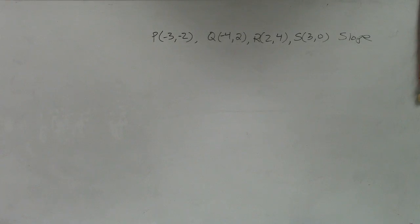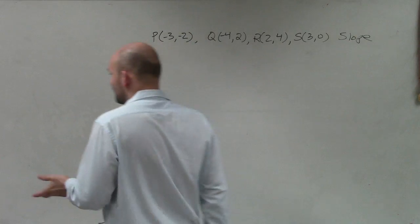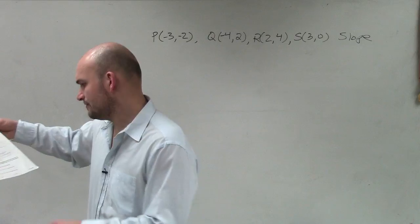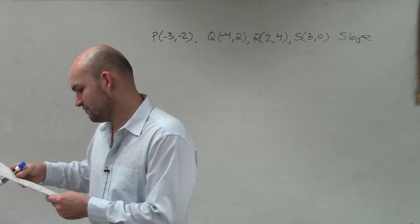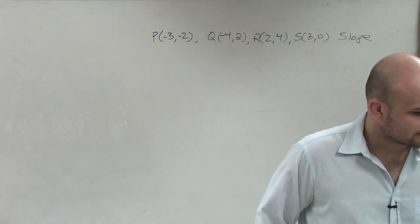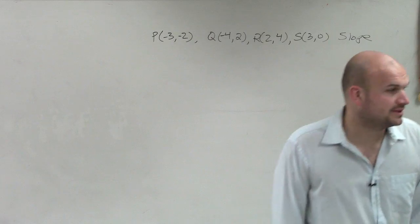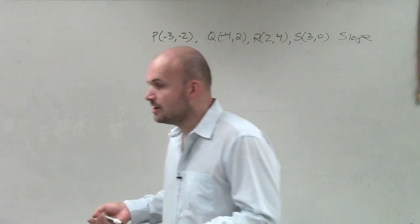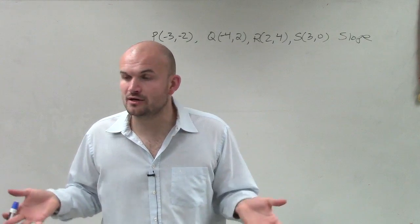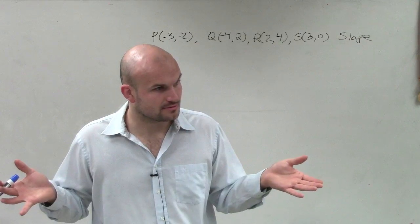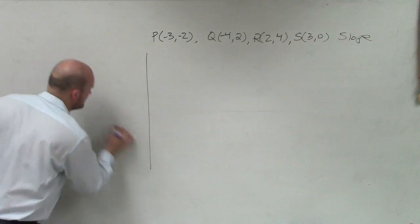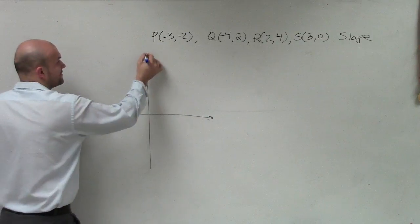So what they're asking us to do here is determine if this is a rectangle. Graph each quadrilateral with the given vertices and determine whether the figure is a rectangle using the indicated formula. We're going to determine that it's a rectangle using the slope formula. It's really hard to do these problems if you're not plotting the points.